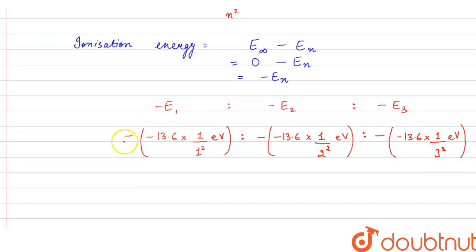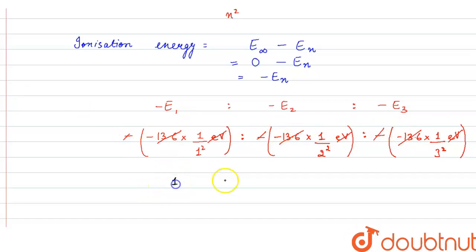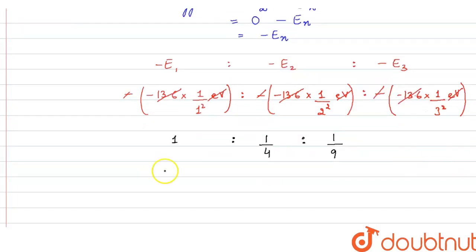From here, the minus signs cancel out and also 13.6 is common in all three terms so it cancels out. The electron volt unit also cancels out. So from here we get the ratio 1 : 1/4 : 1/9.